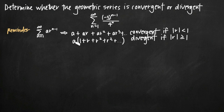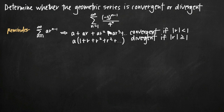It's convenient to understand this expanded form because we can plug in values of n — n equals 1, 2, 3, etc. — into our series to see if it matches this form: a times (1 plus r plus r squared plus r cubed). If it does match that form, we can tell it's a geometric series and easily identify values of a and r, which we need for the convergence test and for finding the sum.